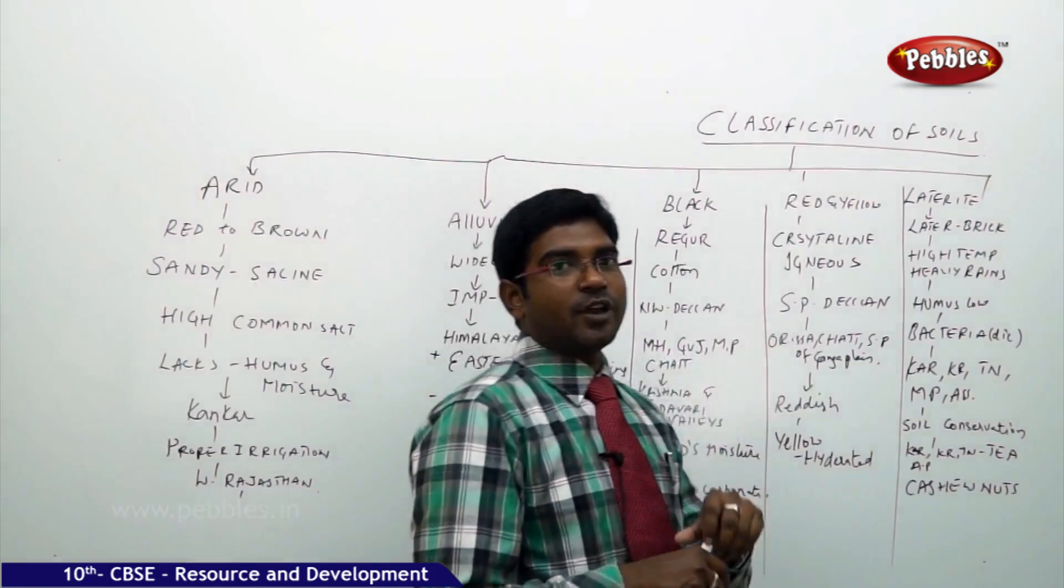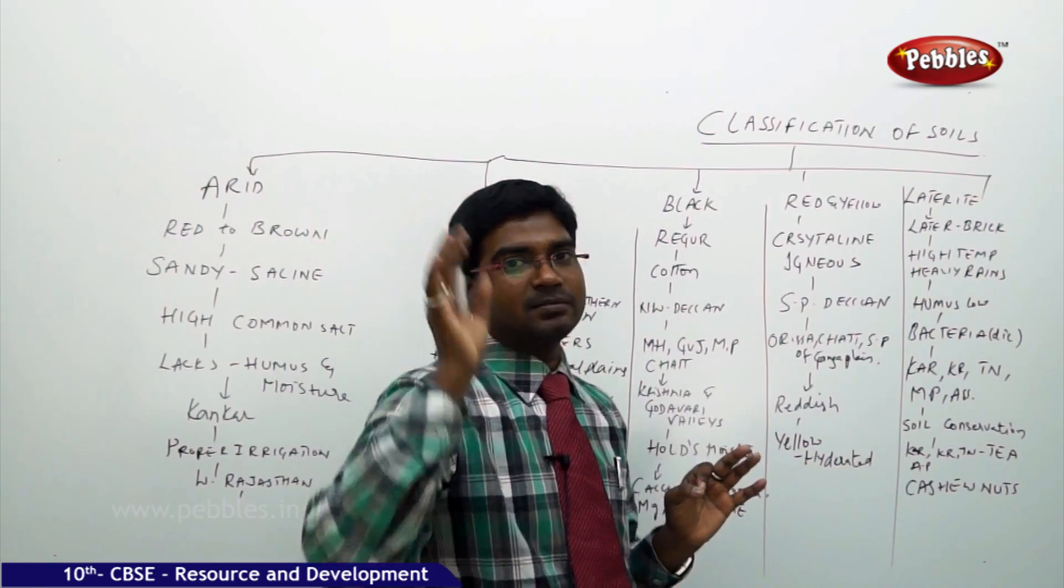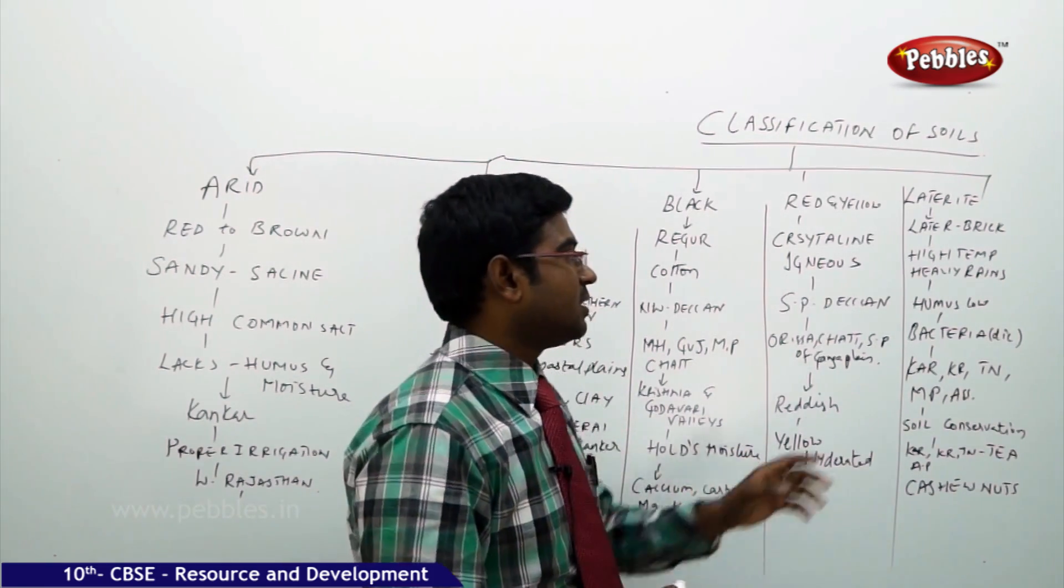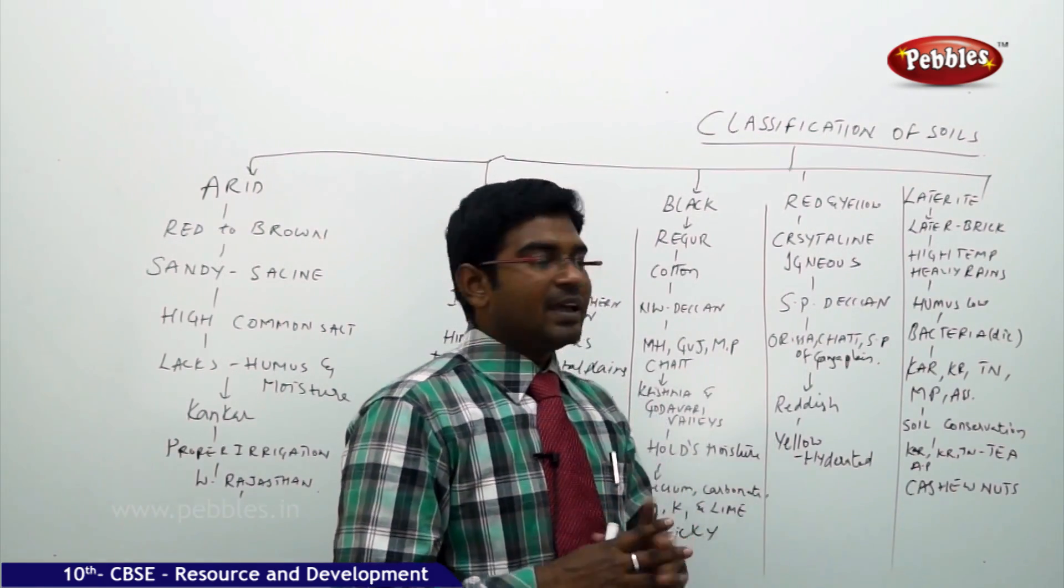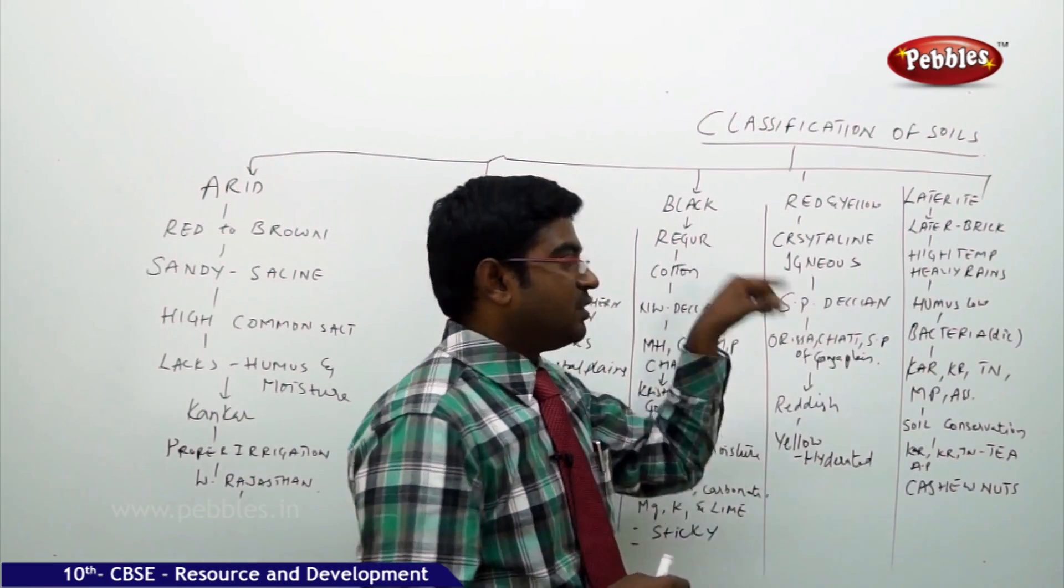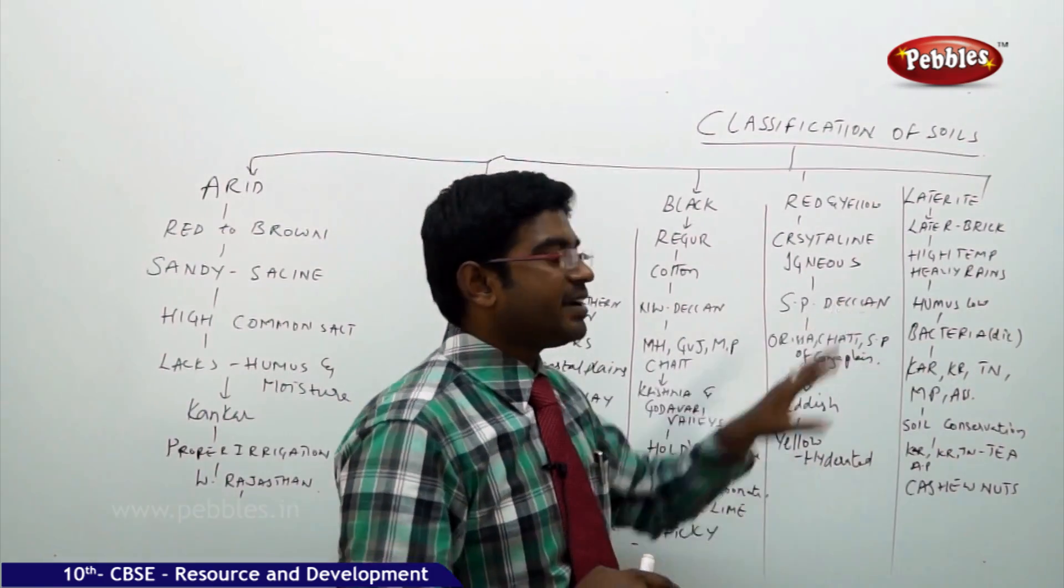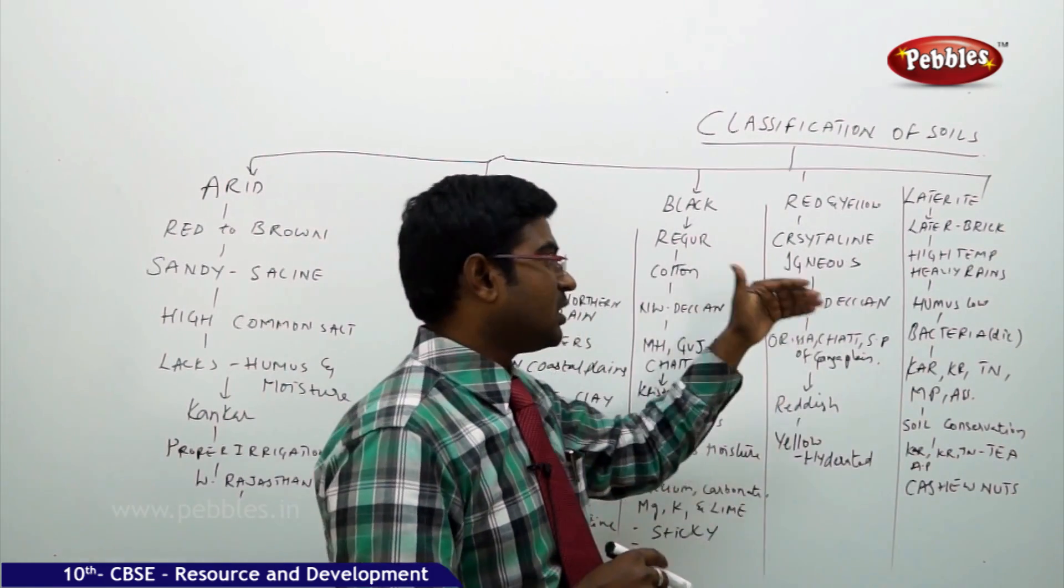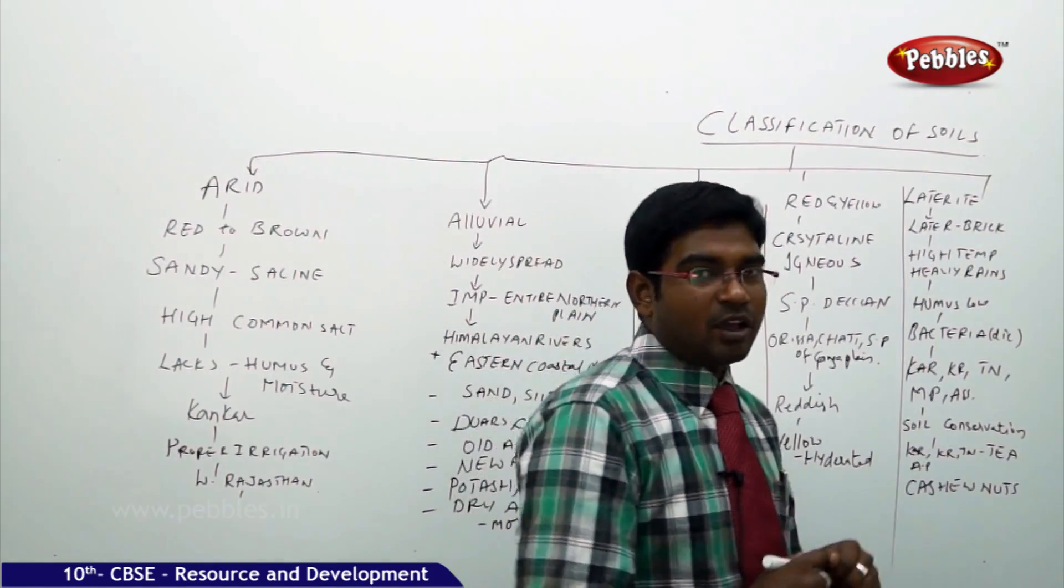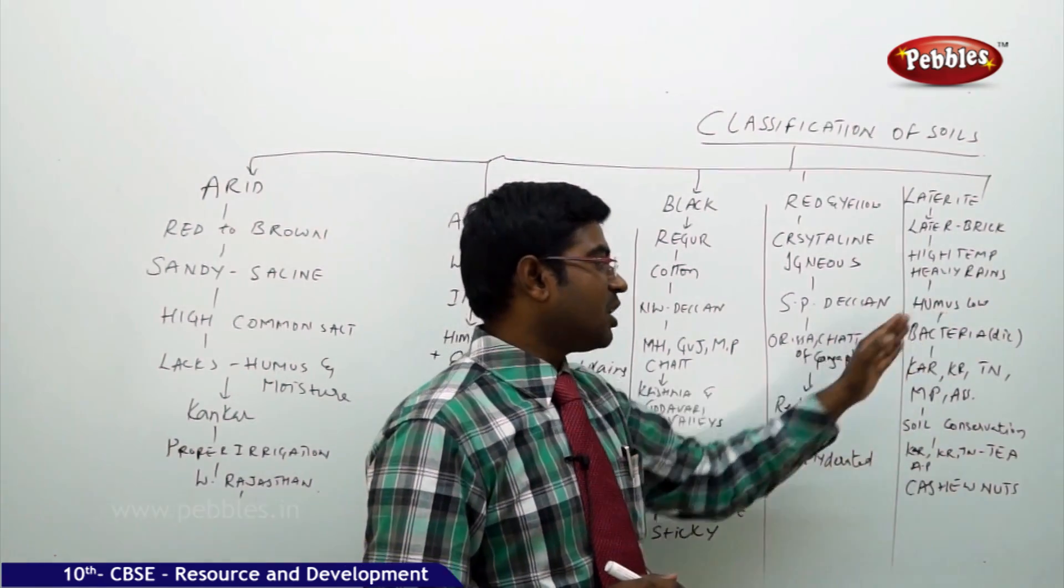Moving on to the laterite soil. Laterite soil is derived from the Greek word later meaning brick. It is having very very high temperatures and heavy rains. Because of high temperatures, the humus bacteria cannot survive here. It is being dead. The humus content is very low. Because of these high temperatures, bacteria cannot survive here. And the country or the states where we found this kind of soil is in Karnataka, Kerala, Tamil Nadu, Madhya Pradesh and Assam regions.